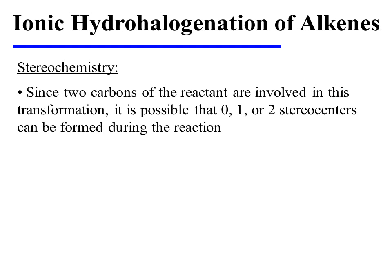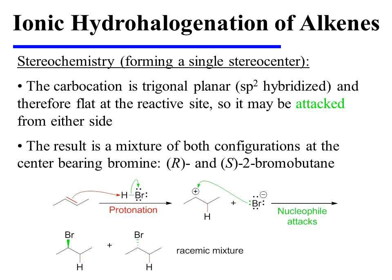Stereochemistry may sometimes be a concern. Since two carbons of the reactant are involved in this transformation, it is possible for no stereocenters to be formed, or for one or two stereocenters to be formed during the reaction. In this specific example, the protonation of the alkene does not lead to the generation of a stereocenter. This center has two hydrogens connected to it, and so it is therefore not stereogenic. However, when bromide attacks the carbocation, a new stereocenter is formed. Since the carbocation is trigonal planar, or flat, it may be attacked from either side.